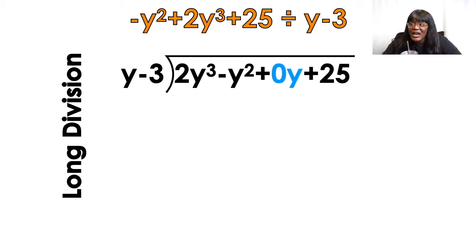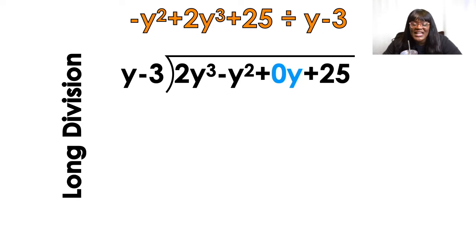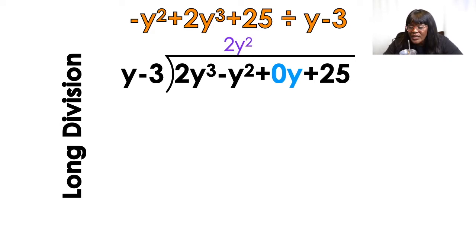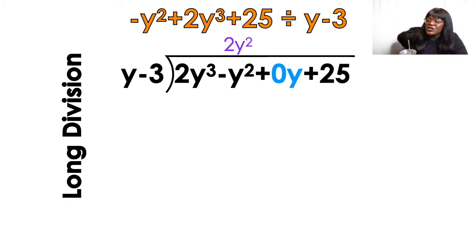Then you're going to put the divisor on the outside — y minus 3. The first question that you're going to ask yourself is: what times y equals 2y cubed? You're just looking at that y on the outside. So that is going to be 2y squared. 2y squared times y equals 2y cubed. Once you figure that out, you put that up at the top and line it up. Because you got 2y squared as your answer, you're going to put it on top of the other squared term.